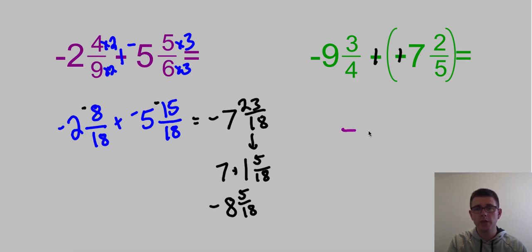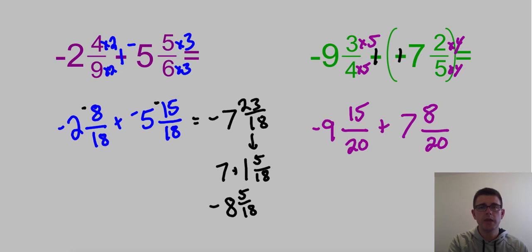First is the fractions. Find your common denominator. 20 and 20, because that works for both 4s and 5s. Multiply times 5 to get 20, so we'll do the same thing up top.